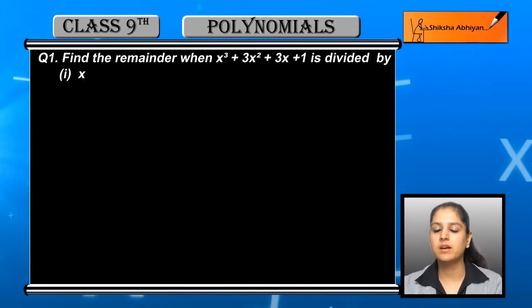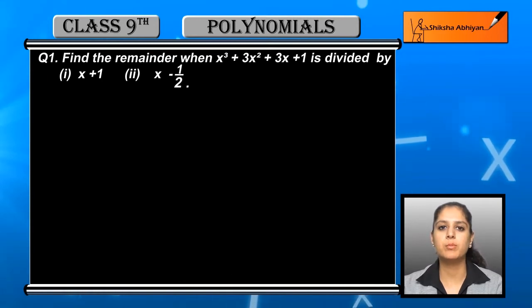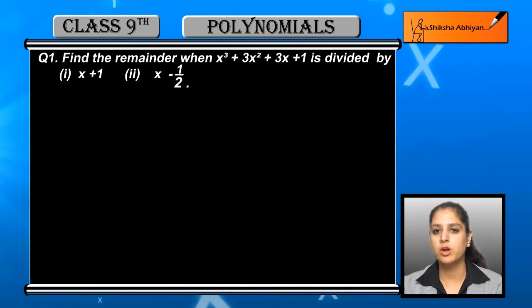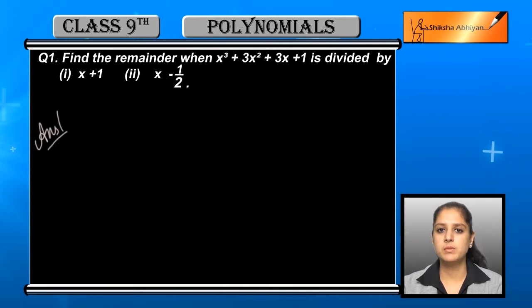The linear polynomial is given, and the main polynomial given is x³ + 3x² + 3x + 1. We need to find the remainder after dividing these two.